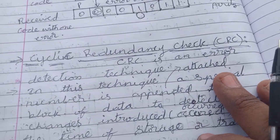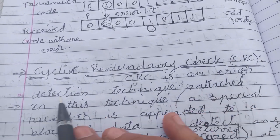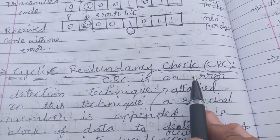The next error detection technique is CRC. CRC stands for cyclic redundancy check.